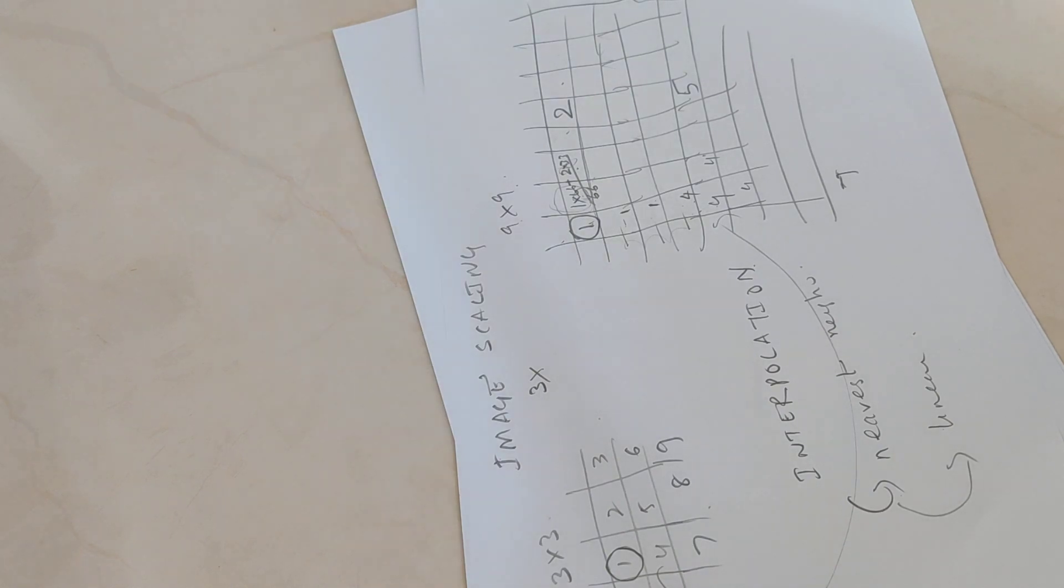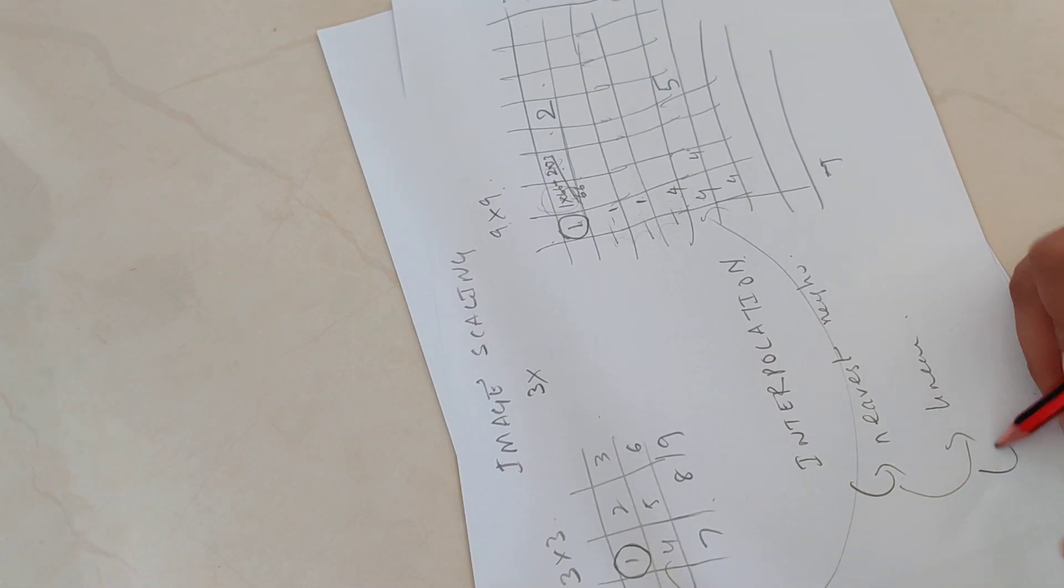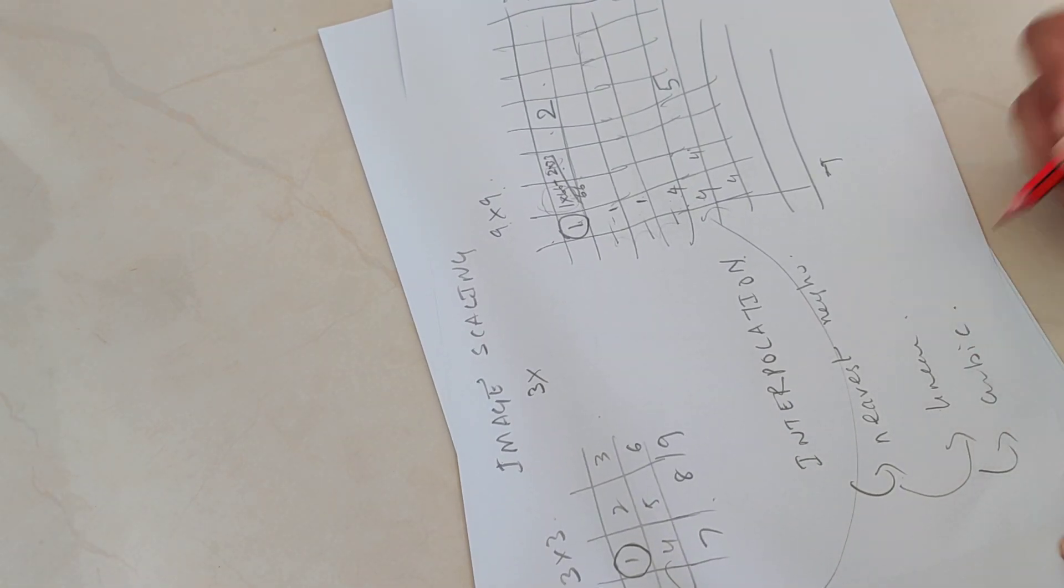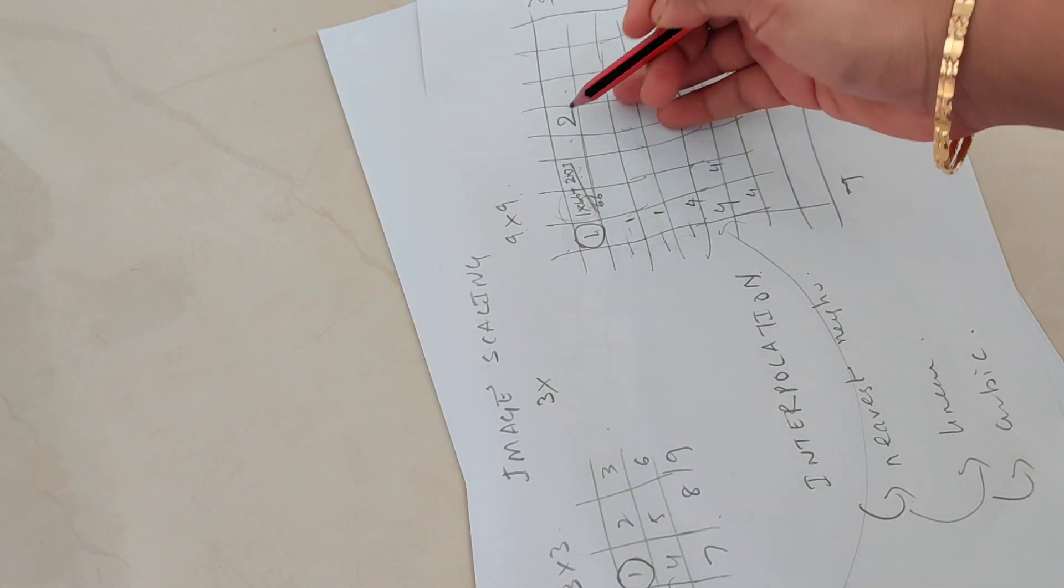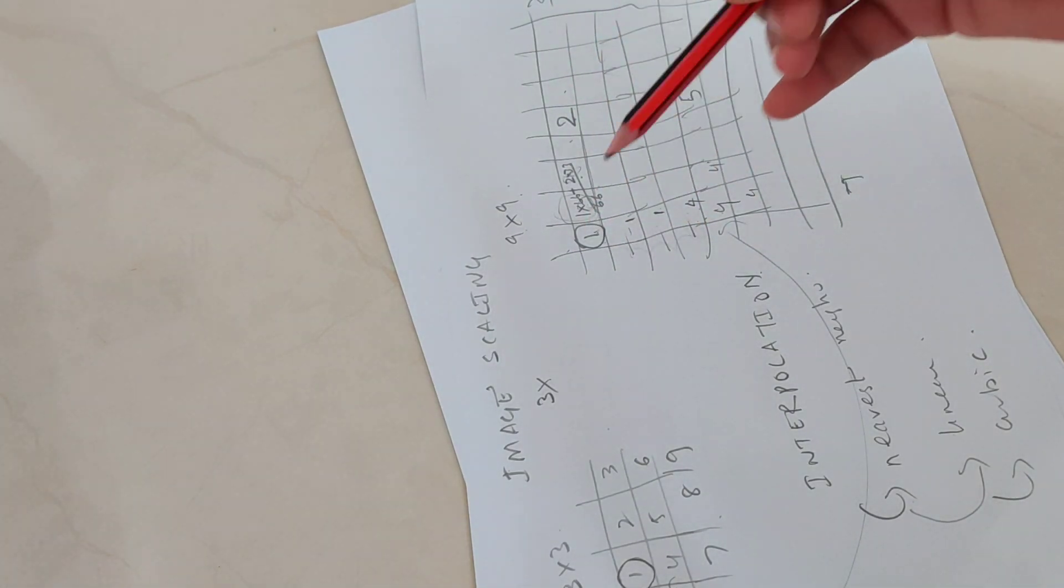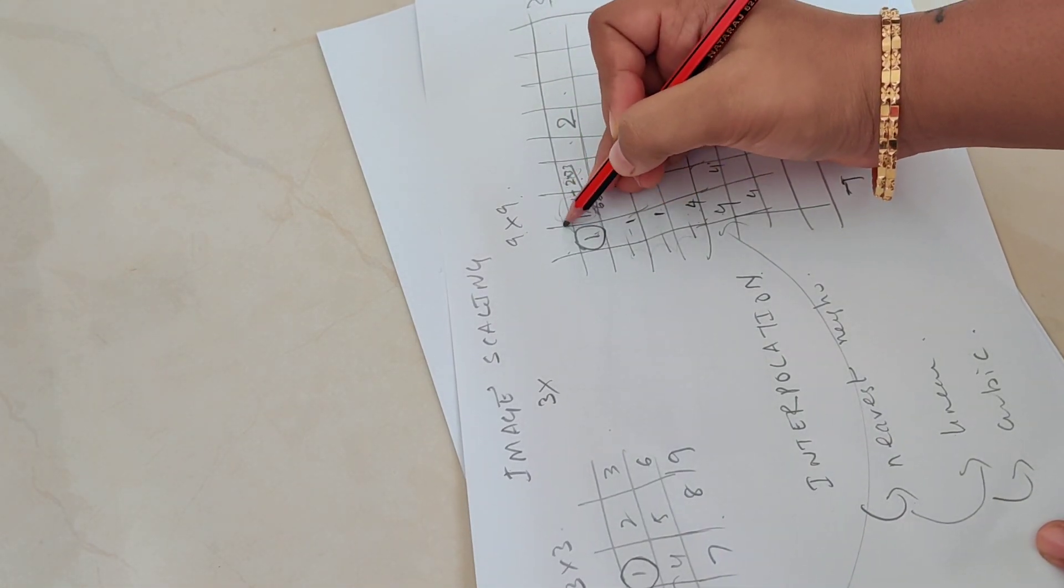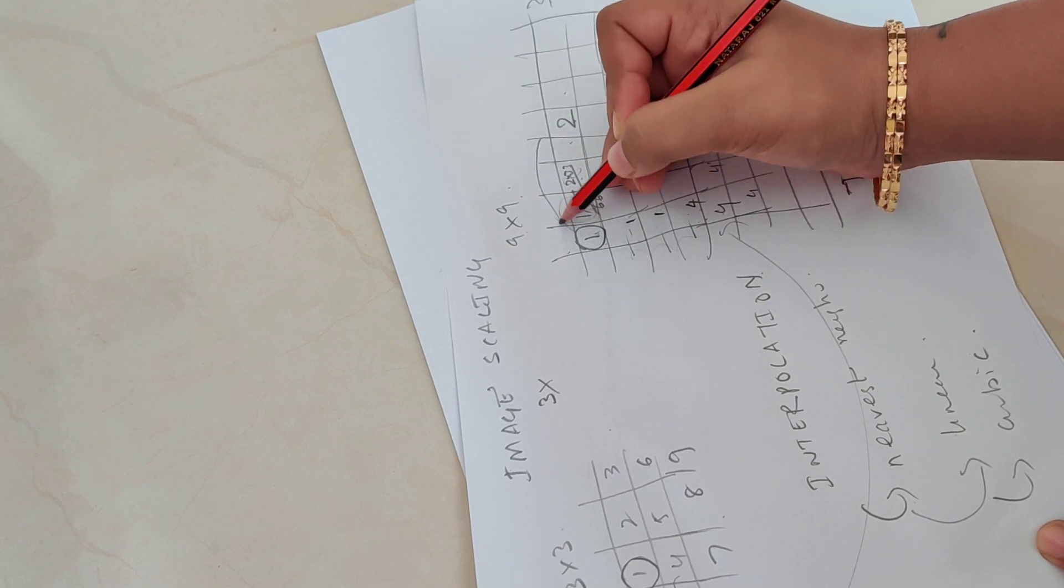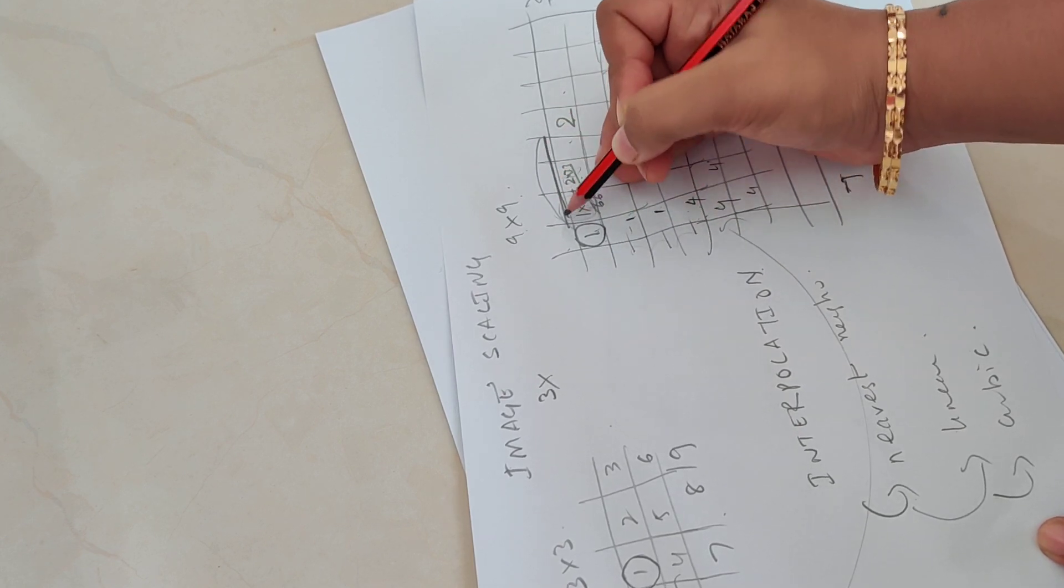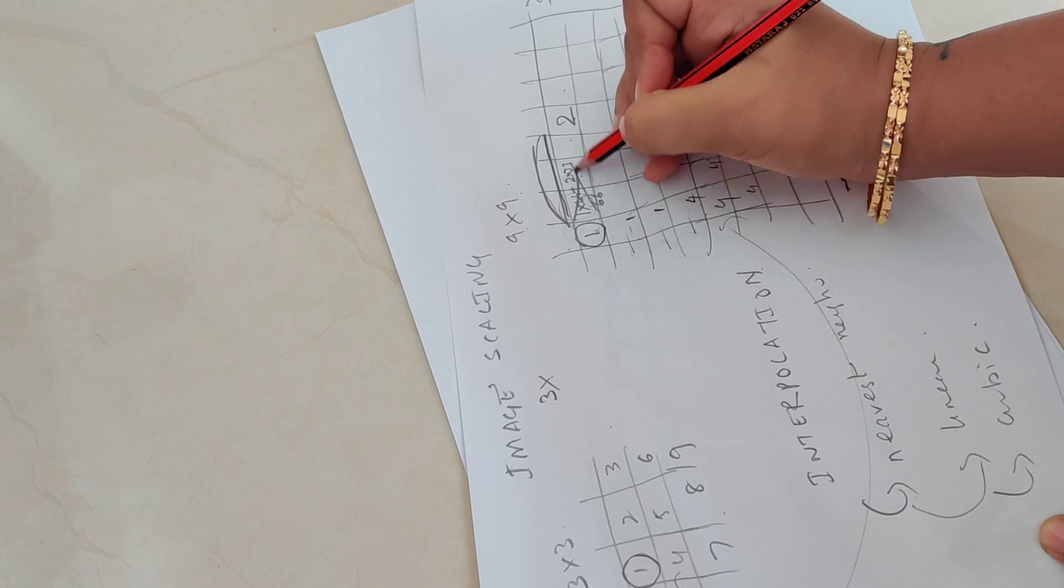But there is another kind of interpolation which is called cubic interpolation. What cubic does is instead of just seeing two pixels, it is going to smoothen this a bit more by considering the next pixel value as well. If you are going to draw a curve like this between these points, would you draw it like this or like this?